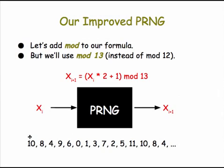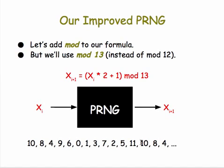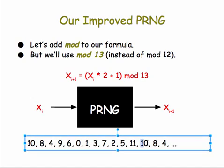We're back and we want to take a look at how good we did with our new improved PRNG. You can see right here that it repeats the 10 that we started with — the seed — and therefore it's going to from that point on generate the same sequence: 8, 4, 9, 6, 0, 1, 3, 7, 2, 5, 11, and then get to 10 again.